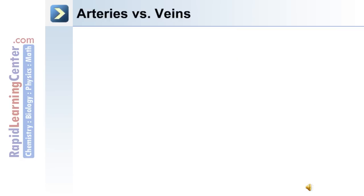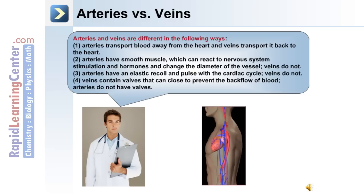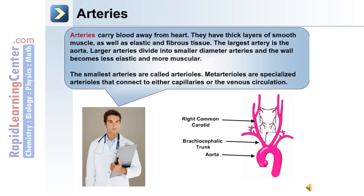The following are some ways that arteries and veins differ. Typically, arteries transport blood away from the heart and veins transport it back. Arteries have smooth muscle that can react to nervous system stimulation and hormones to change vessel diameter. Arteries have elastic recoil and pulse with the cardiac cycle. Veins contain valves which prevent backflow of blood; arteries do not have valves. Arteries have thick layers of smooth muscle as well as elastic and fibrous tissue. The largest artery is the aorta, and as larger arteries divide into smaller ones, the wall becomes less elastic and more muscular. The smallest arteries are called arterioles.